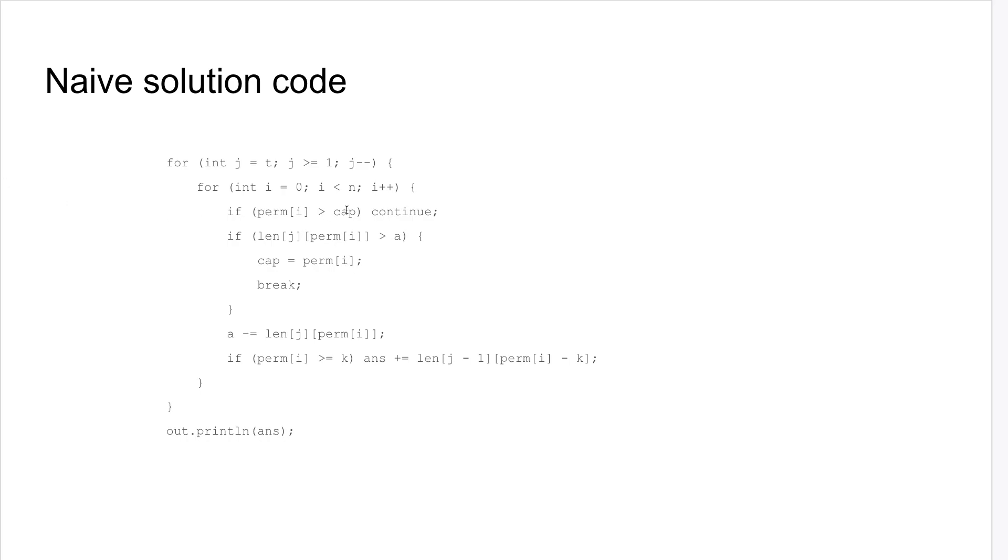In this case, cap is initially n. And basically, we iterate through each level, go through the permutation order. If the length is bigger than a, then that means that we stop here. We set the new cap to perm[i].